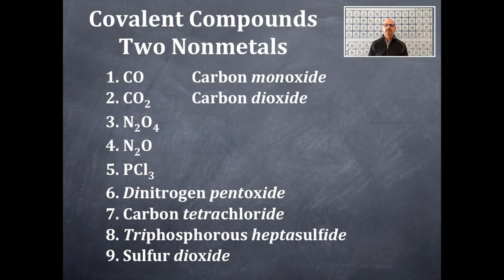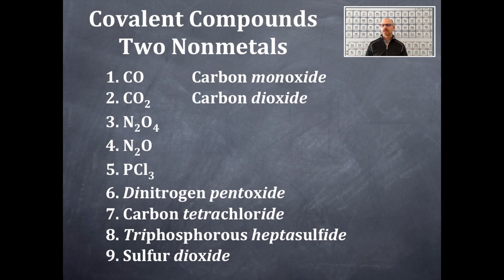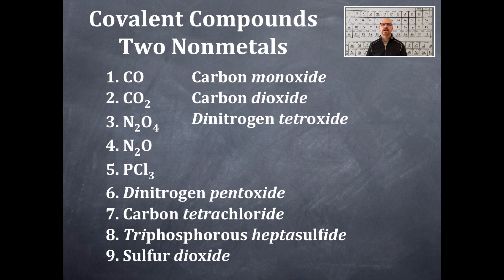Let's try number three. We have a nitrogen and an oxygen. The least electronegative element is written first — that is the nitrogen, which is furthest from fluorine on the periodic table. Now we have two nitrogens, so we're going to have to write the prefix for two, which is di. Then the second element is oxygen, and there are four oxygens, so we use the prefix for four, which is tetra. That also ends in 'a', so we drop the 'a' because oxygen begins with a vowel. So we get dinitrogen tetroxide — notice the -ide ending on the second element.